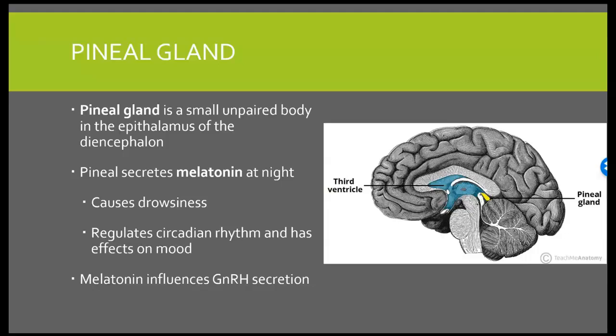The pineal gland is also going to influence gonadotropin releasing hormone secretion. So when your body is ready for puberty to hit, the pineal gland has a lot to do with that in telling the hypothalamus it can start releasing gonadotropin releasing hormone, which then travels to the anterior pituitary gland, telling it to release FSH and LH. So before puberty, those hormones are not released by the anterior pituitary gland.